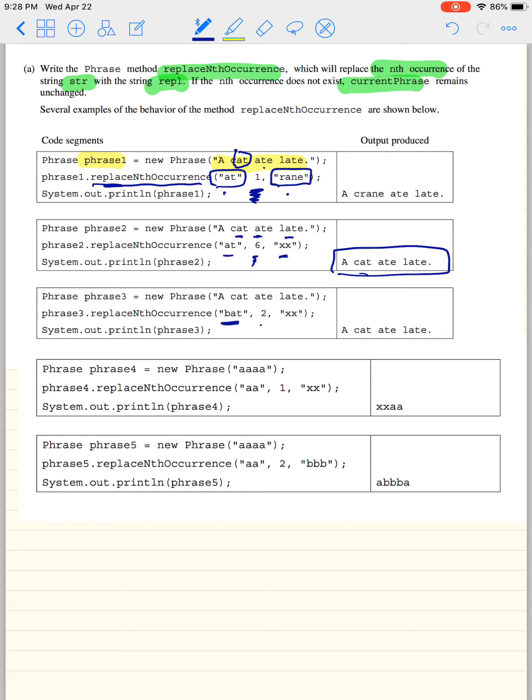Bat to xx, it's looking for the second time you see bat, but we never see bat at all. So it stays exactly the same. Here, you're going to replace AA with xx the first time you see AA. The first time you see AA is right there.